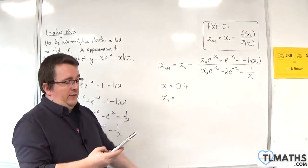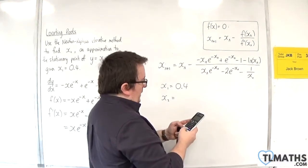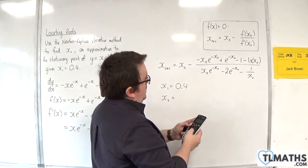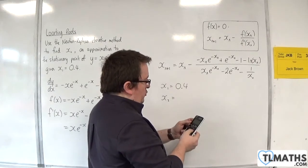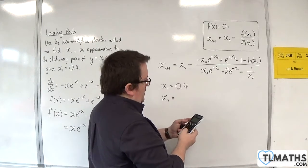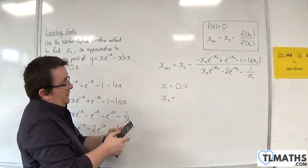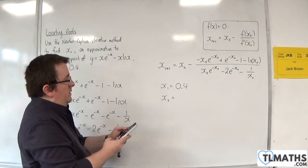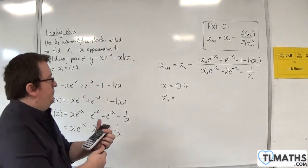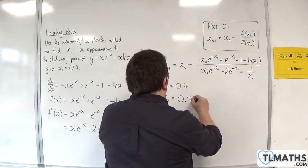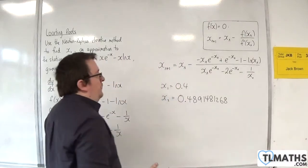Then I'm going to use the answer key in place of the xn. So the answer key, take away, fraction button, minus the answer key times e to the minus answer plus e to the minus answer key, take away 1, take away the natural log of the answer key, over the answer key times e to the minus answer take away 2 times e to the minus answer take away 1 over the answer key. So pressing equals, we get 0.4891481268. So that is my answer.